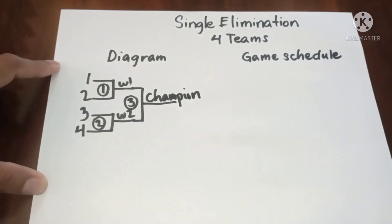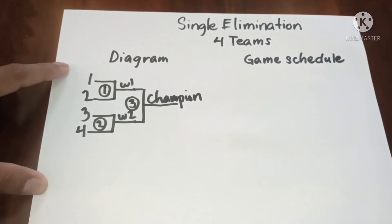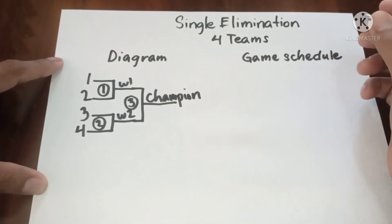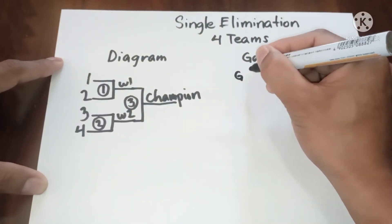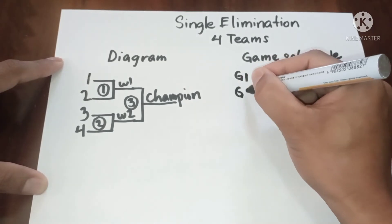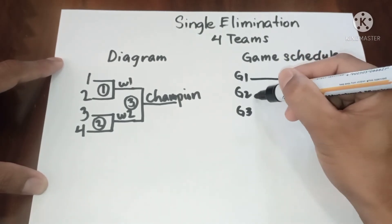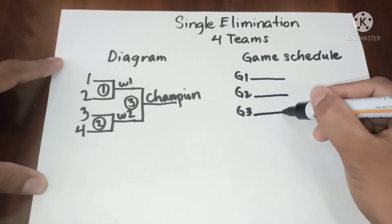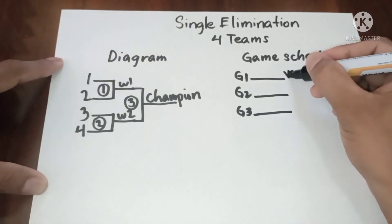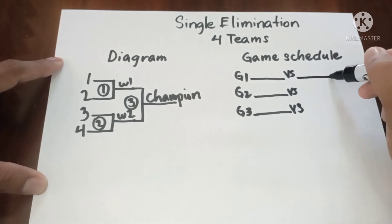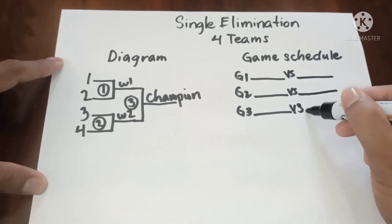Now let's proceed to game schedule. We're going to interpret the diagram and then write it into game schedule. So we have three games. You need to draw the game schedule properly so that all of your competitors, participants, and even audience can easily understand the flow of the competition.